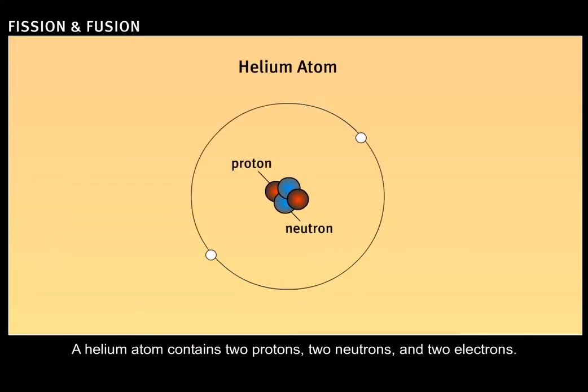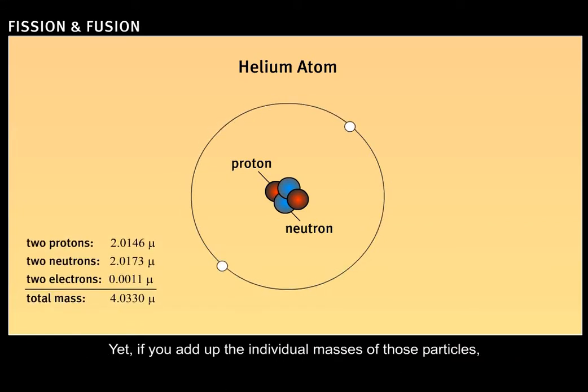A helium atom contains two protons, two neutrons, and two electrons. Yet, if you add up the individual masses of those particles, the total is more than the mass of a helium atom.